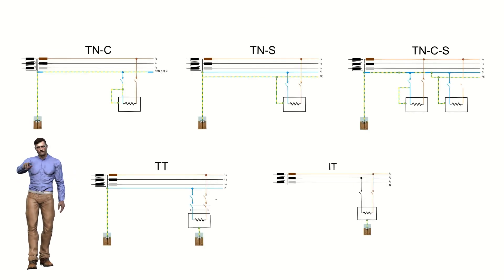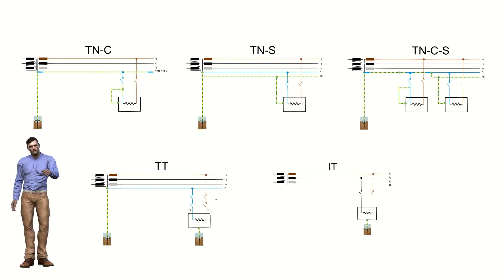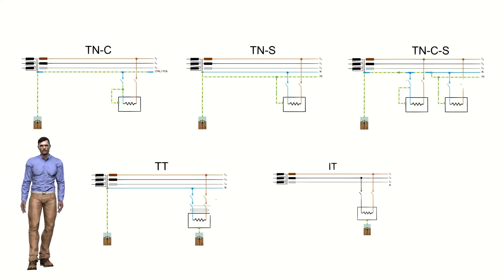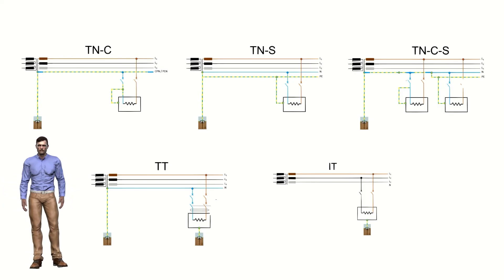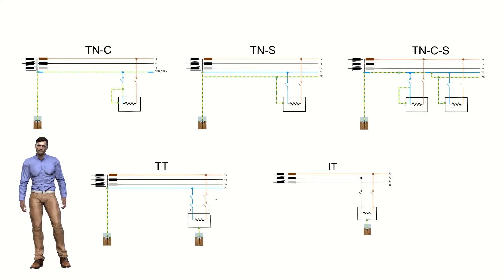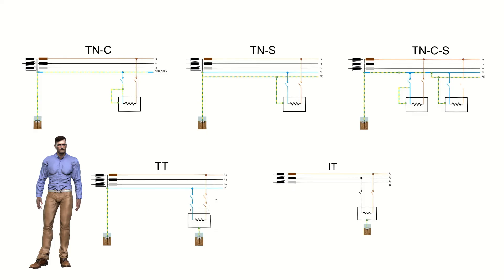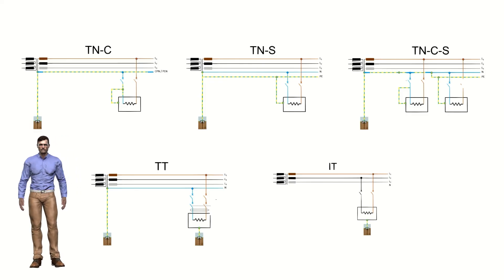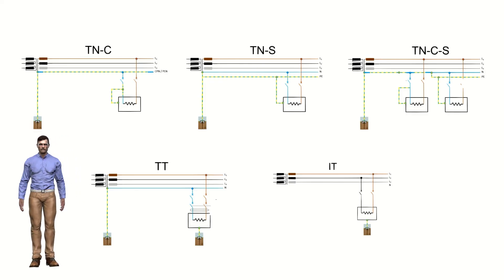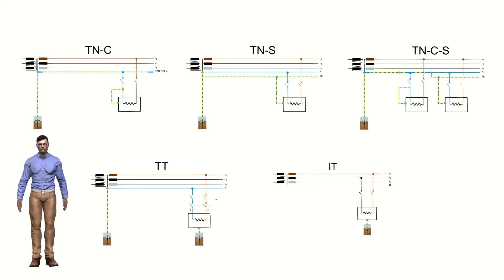Each distribution scheme has its advantages and disadvantages. The TN system implies a lower cost in electrical protections but requires an adequate selection of protections and offers lower protection against fire. The TT system offers high protection of people, of the installation's own loads, and against fires, but requires greater surveillance of the grounds and verification of the correct operation of the differential protections. The IT system has the advantage of offering high availability and fire protection, but installations cannot be too extensive and usually require insulation monitoring devices.